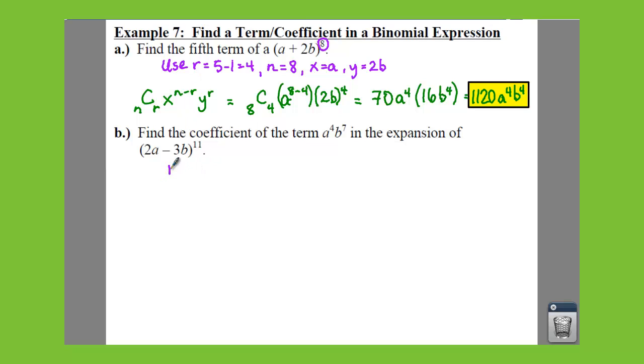So let's figure out what we have. Well, we need to figure out our r, we need to figure out n, your x, and your y. So we know that our n is 11 because that is right here. So there's your 11.